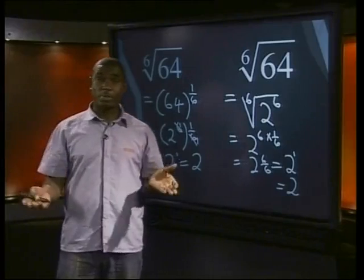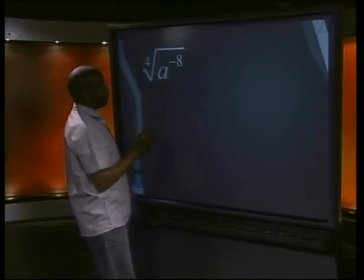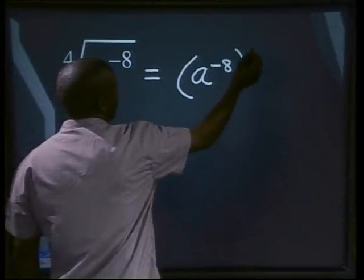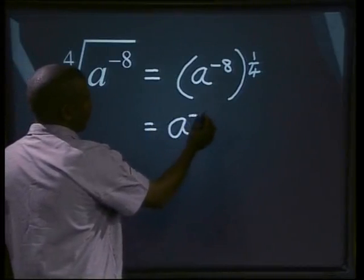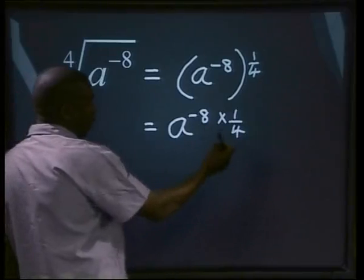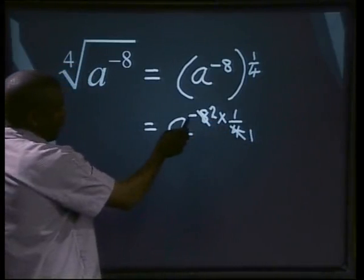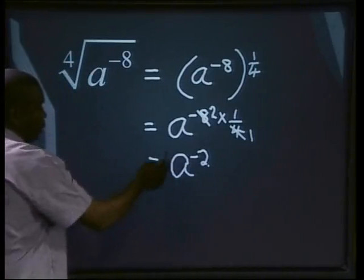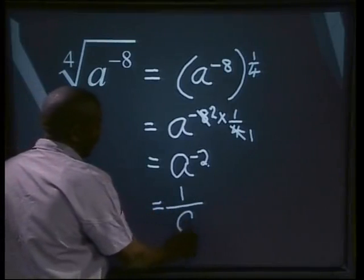Now let's try one with negative exponents. Can you simplify the 4th root of a to the power of minus 8? This equals a to the power of minus 8, all to the power of 1 over 4, which is the same as a to the power of minus 8 multiplied by 1 over 4. 4 goes into 4 once and into 8 twice, giving us a to the power of minus 2. This can be written as a positive exponent: 1 over a to the power of 2.